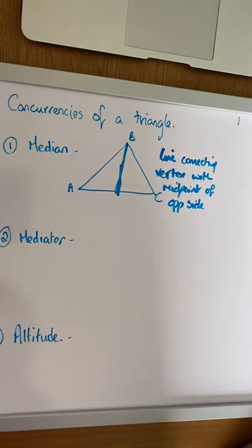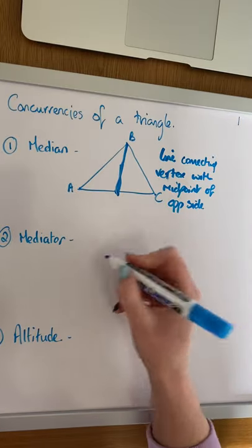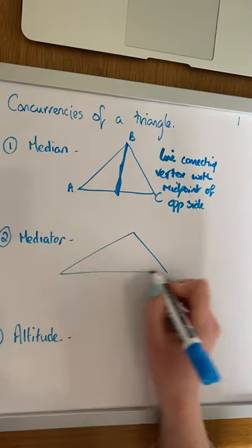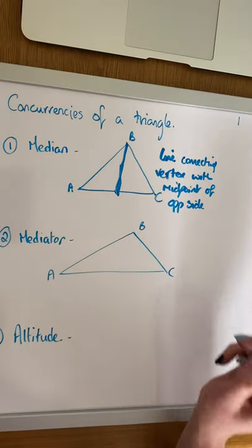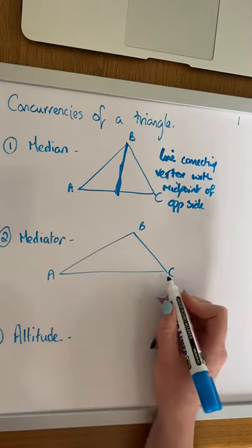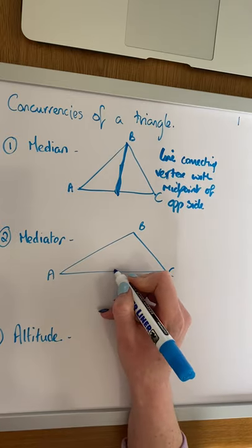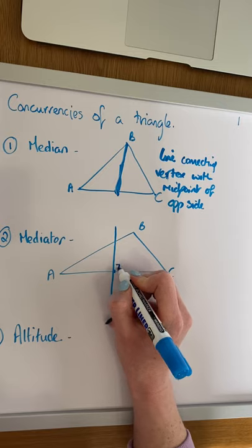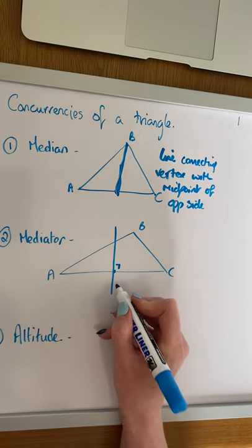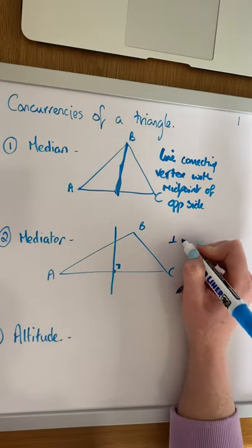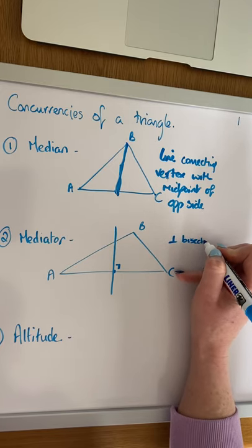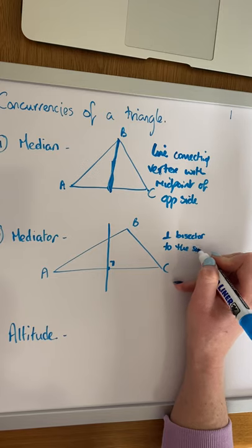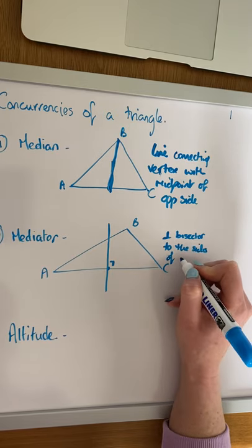The next definition is the mediator. The mediator is the perpendicular bisector of a side of a triangle. Again, if we look at our triangle ABC, the perpendicular bisector of AC is going to go through the midpoint of AC and be perpendicular to AC, creating a 90-degree angle. So this here would be the mediator — a perpendicular bisector to the sides of a triangle.